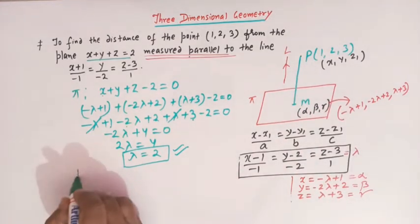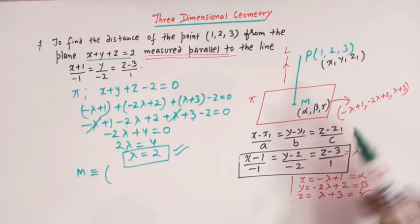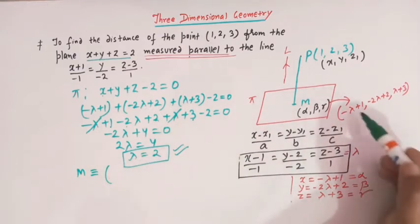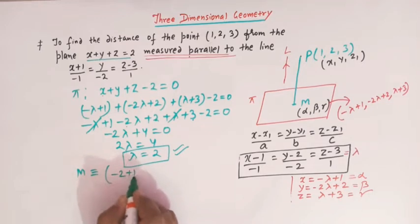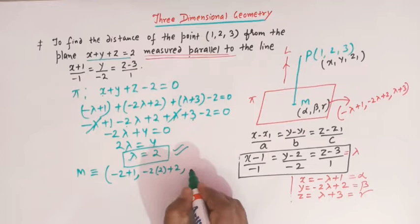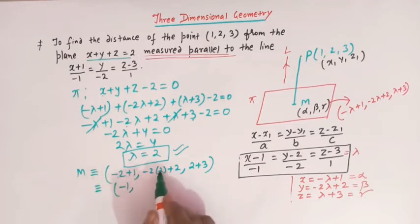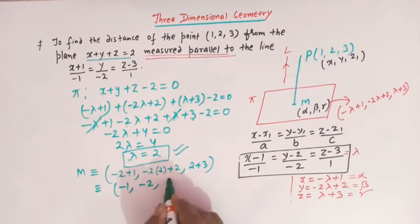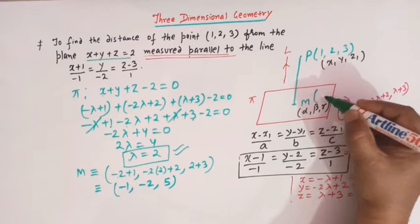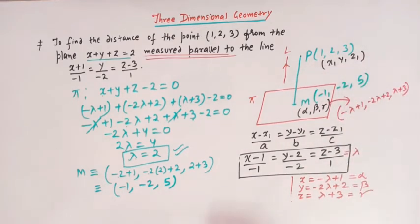Now that we have λ = 2, we can find the coordinates of point M. Substituting: x = -2 + 1 = -1, y = -2(2) + 2 = -4 + 2 = -2, and z = 2 + 3 = 5. So the coordinates of point M are (-1, -2, 5).